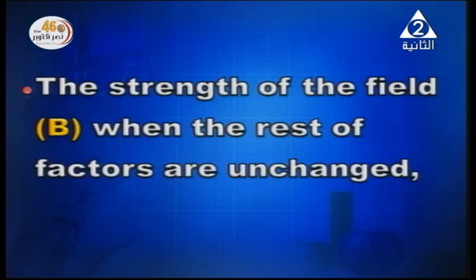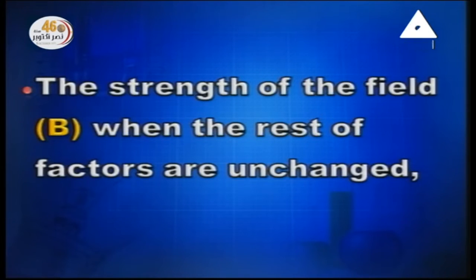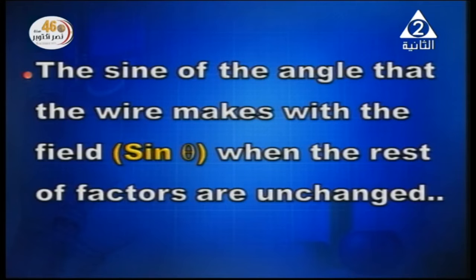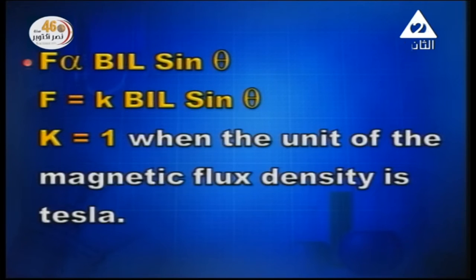Another factor is the strength of the field — the magnetic flux density. The force is directly proportional to B. And finally, sine of the angle that the wire makes with the field — sine theta. All these factors combined give: F is proportional to B I L sine theta.